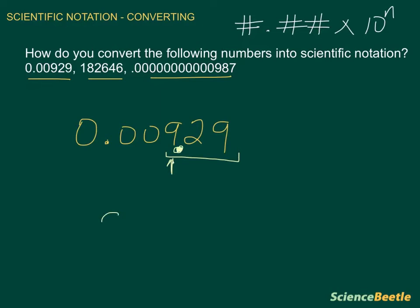So we're going to write this number as 9.29, which meets that first base part of the formula. We're going to multiply this times 10, and now all that's left is to figure out the exponent n. To do that, we identify the number of spaces between where the decimal normally exists and where we would like it to be. Counting the spaces: one, two, three spaces — so the exponent is going to be 3.